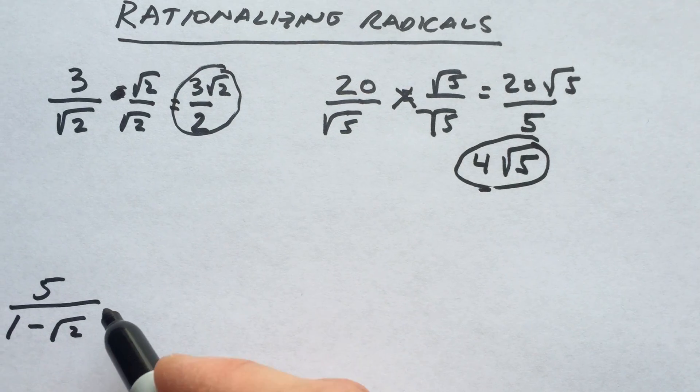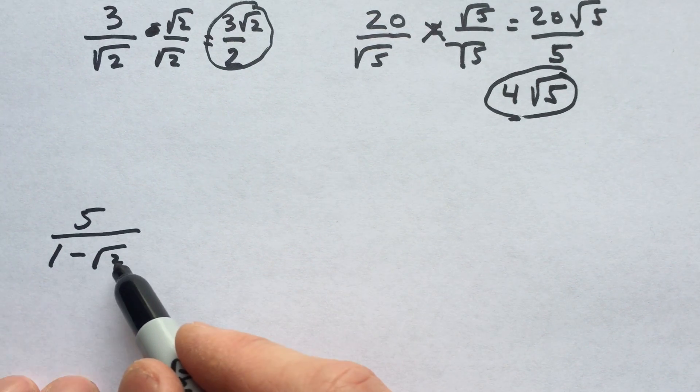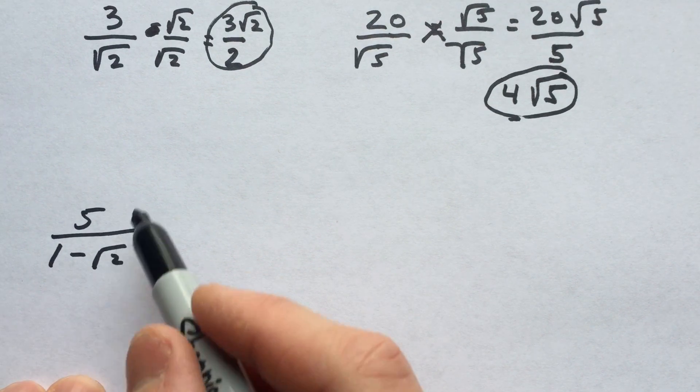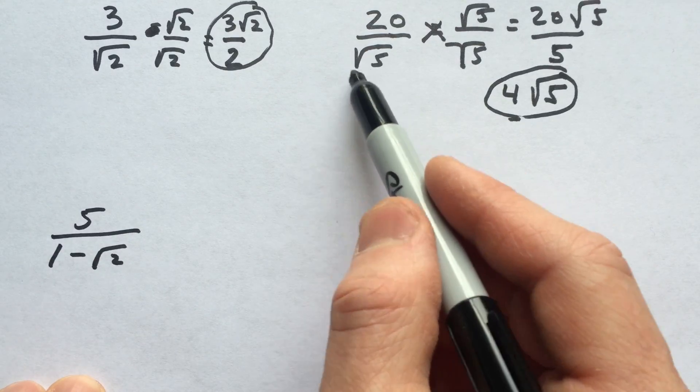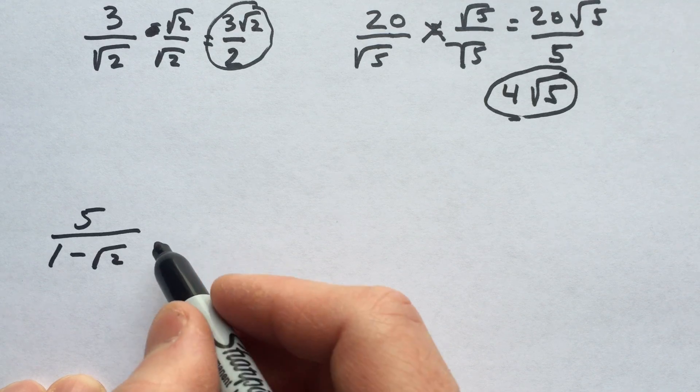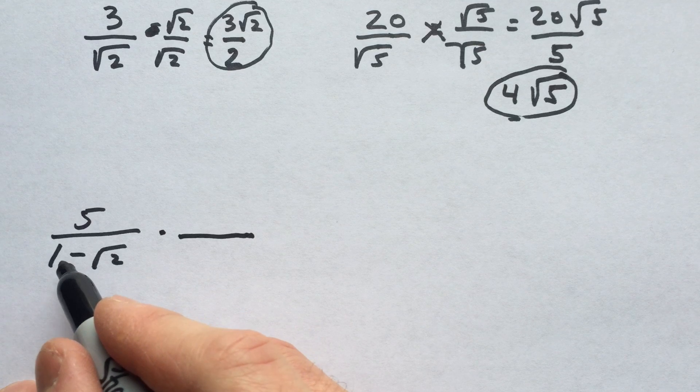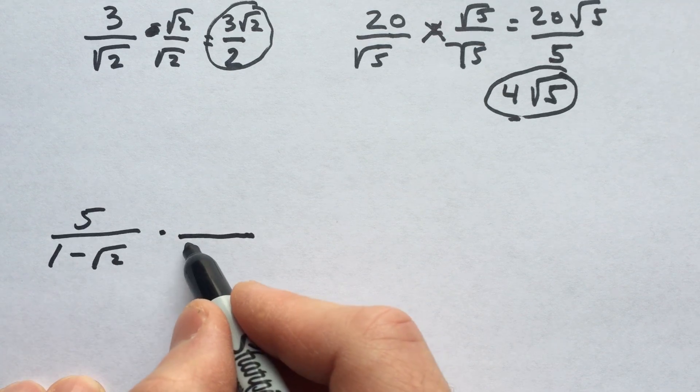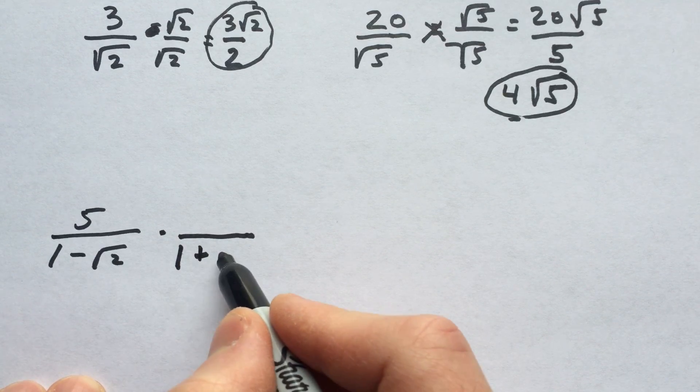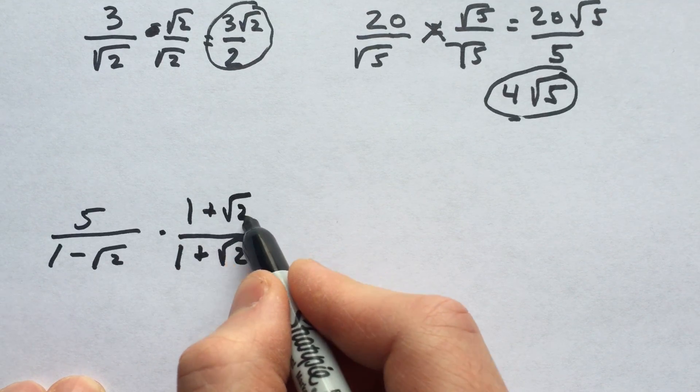Now let's look at an example where we've got 5 divided by 1 minus square root of 2. This is a binomial. These up here were just monomials, meaning one term in the denominator. Binomial means two terms, like bicycle. So we're going to multiply by what they call the conjugate. It's the same two terms, but instead of minus in between them, we put plus. So 1 plus the square root of 2.